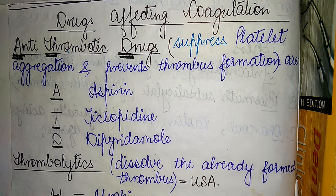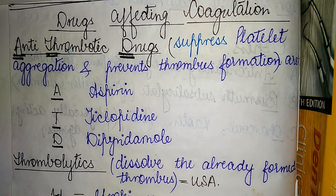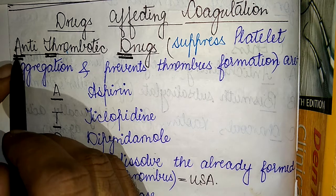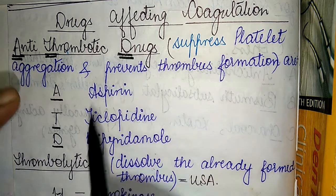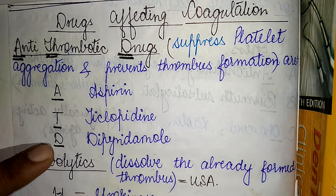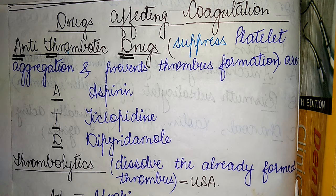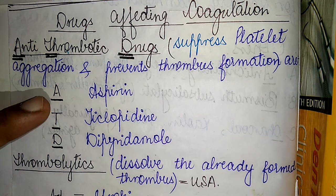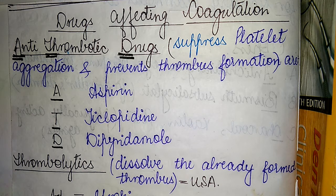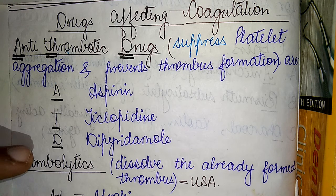The mnemonic for the antithrombotic drugs uses the initials A, T, and D, which helps us easily remember the classes of drugs. These antithrombotic drugs suppress platelet aggregation and prevent thrombus formation. A corresponds to aspirin, T stands for ticlopidine, and D stands for dipyridamole.